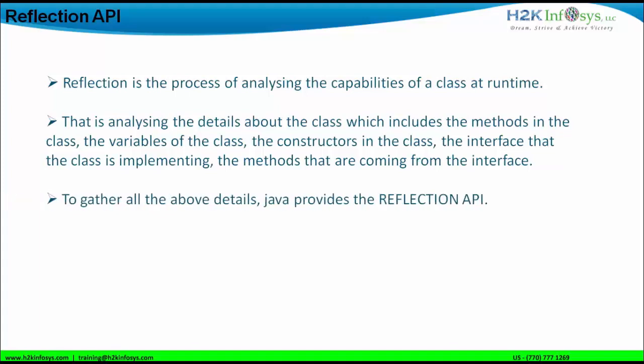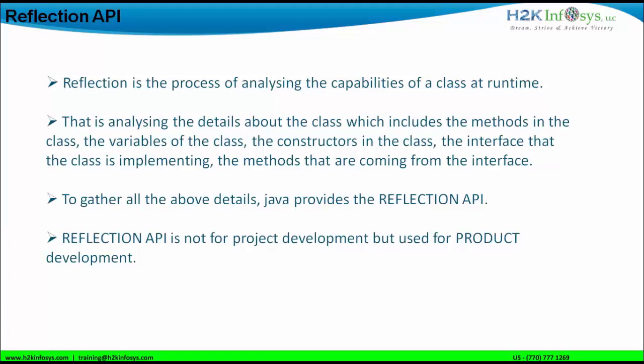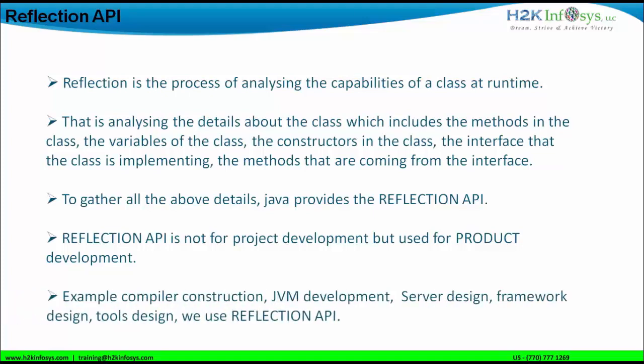To gather all the above details, we use the Reflection API. Reflection API is not used for project development but for product development. This API is not of importance as far as project development is concerned. For service-oriented companies, you would not need the Reflection API unless companies are involved in product development. For example, if I want to make a compiler in Java, develop my own Java Virtual Machine, design a server, create a framework, or design a tool — we can use the Reflection API.